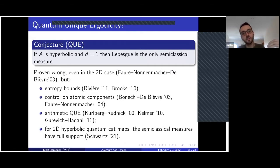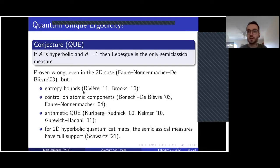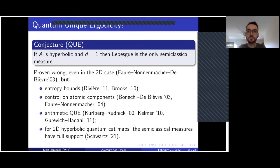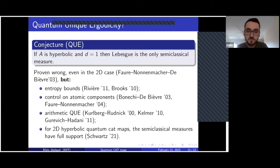This is not given by the entropy bound alone, because you can have invariant measures supported on Cantor sets with positive entropy. There are a lot of invariant measures for hyperbolic matrices, and in particular you have measures supported on Cantor sets with positive entropy.